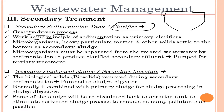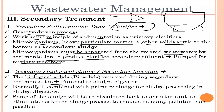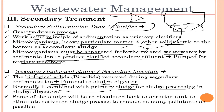In the secondary clarifier, microorganisms and heavy particulate matter settle to the bottom as secondary sludge. Microorganisms must be separated from the treated wastewater by sedimentation to produce clarified secondary effluent for tertiary treatment. The secondary biological sludge — biosolids — removed during secondary sedimentation is pumped to the sludge digester, where it combines with primary sludge. Some of this sludge is recirculated back to the aeration tank to stimulate the activated sludge process and remove as many pollutants and suspended solids as possible.